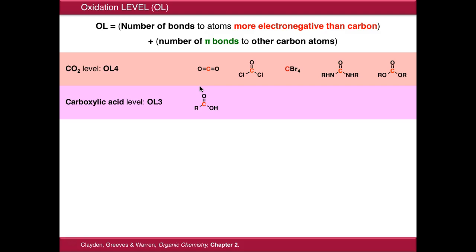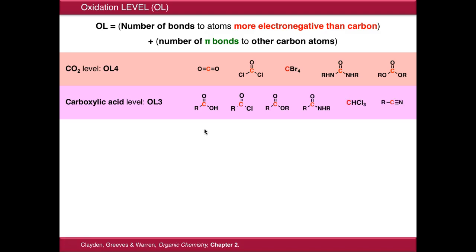If we drop down to oxidation level three, we're in the carboxylic acid level. Our carbon atom is now making three bonds to atoms which are more electronegative than carbon, as in a carboxylic acid. This level also includes acid halides, esters, amides, trihalides like chloroform, and also nitriles.